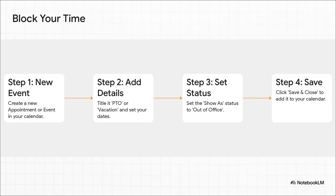The steps are super straightforward, but I really want you to focus on step three — this is the absolute key. When you create that vacation event, it's so easy to just leave the status as busy. Don't do it. You have to click that dropdown and explicitly choose out of office. That is the magic switch. That's what puts up the shield and lets everyone know you're gone.